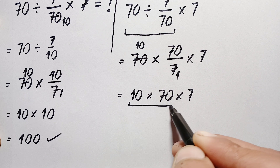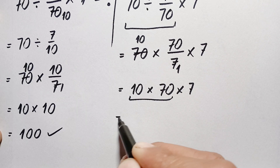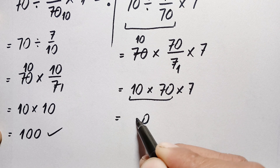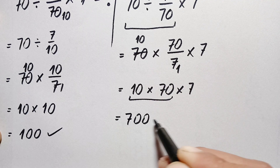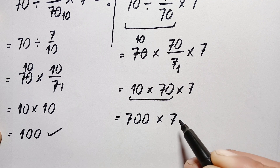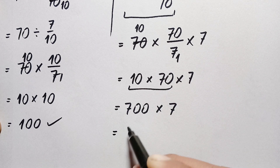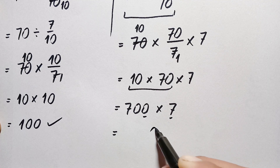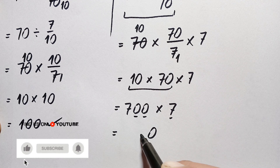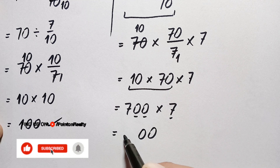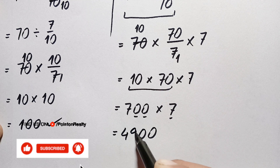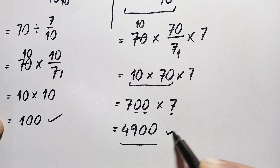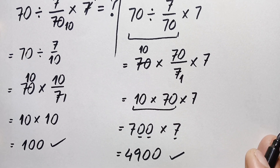We have two multiplication operations, so we work left to right. First, 10 times 70 is 700, giving 700 times 7. Then 700 times 7: 7 times 0 is 0, 7 times 0 is 0, and 7 times 7 is 49, so this gives 4900. This is our final correct answer.